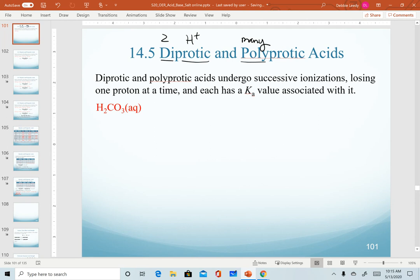We are still only transferring one proton at a time. The number of protons in an acid will determine the number of ionization or dissociation equations that we have to write. Each successive ionization, each step as we remove a proton, has its own Ka value associated with it.